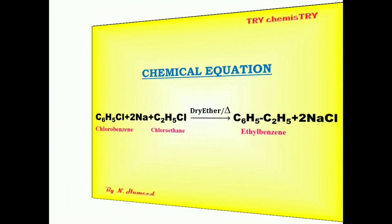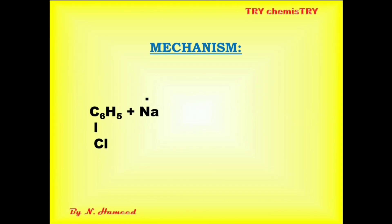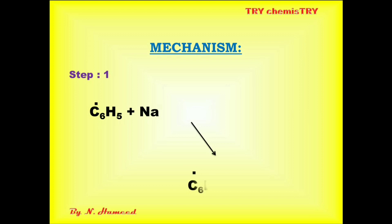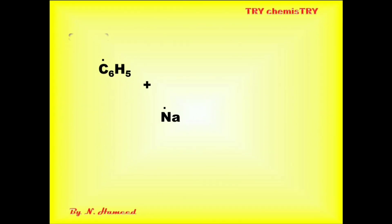Now we can see the mechanism. As before, a sodium atom donates one electron to the phenyl group. In the first step, the phenyl group cleaves the chlorine. The chlorine gains a pair of electrons and becomes Cl minus. That Cl minus plus Na plus gives sodium chloride, leaving a phenyl free radical.